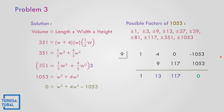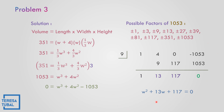So the quadratic term is 1w squared plus 13w plus 117 equals 0. But let us try if we have factors. The product is 117 and the sum is equal to 13. As you can see, there is no exact value — there are no integer factors. So let us proceed to the quadratic formula.